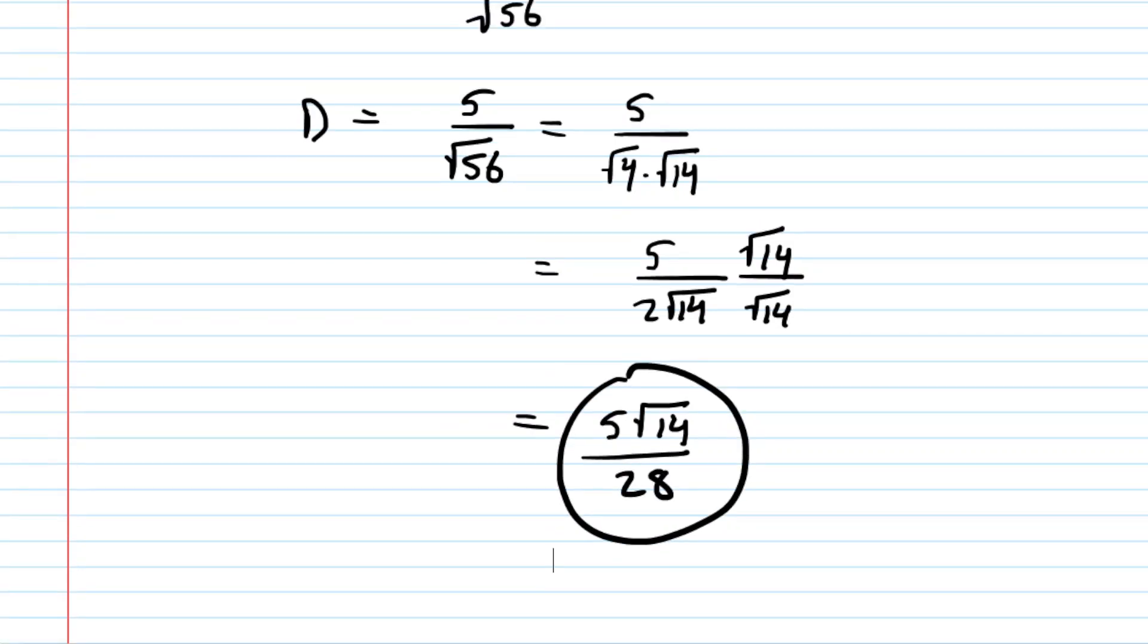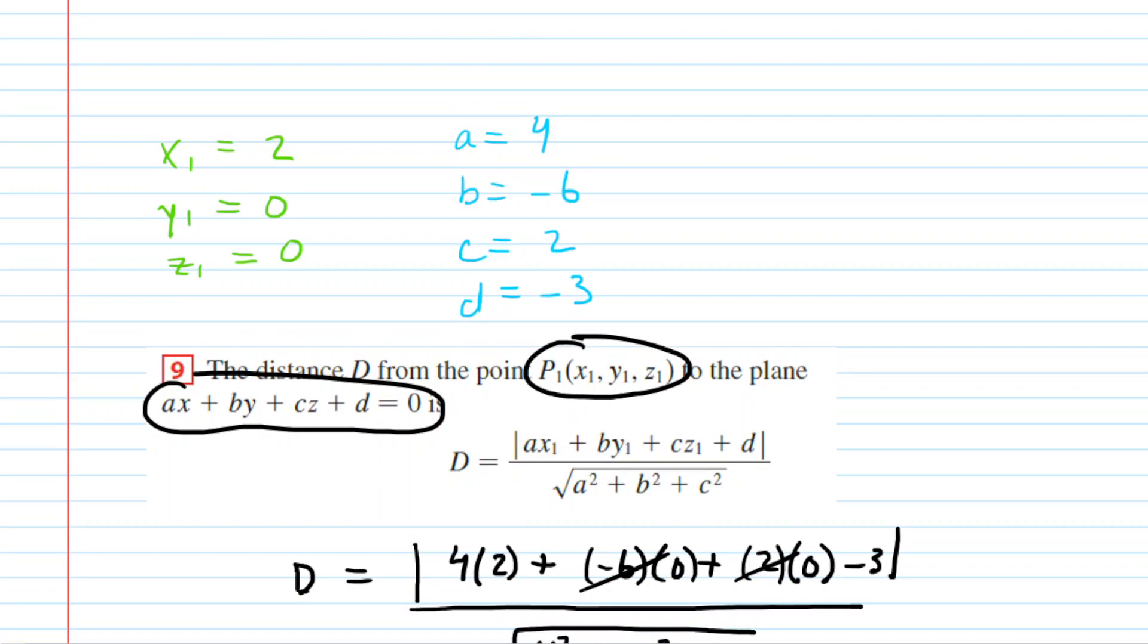So, basically, all you really need to do is find a point on the first plane, the green plane. We did that by letting y and z equal 0. And then you just need to rearrange the equation of the second plane, the blue one, into the standard form. That would give you your a through d values, and then you plug in to this equation here.